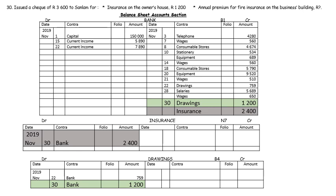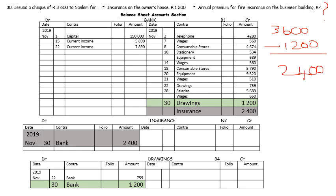The last transaction, on the 30th, we issue a cheque to Sunlum. We are paying insurance on the owner's house and the insurance on the business. The cheque was $3,600, of which $1,200 is for the owner's private insurance. So $2,400 is the amount you have to pay for business insurance. Whatever the owner takes is called drawings — you have a drawings account for the $1,200. Then the other $2,400 must go to insurance — paying insurance, new account, expense, insurance.